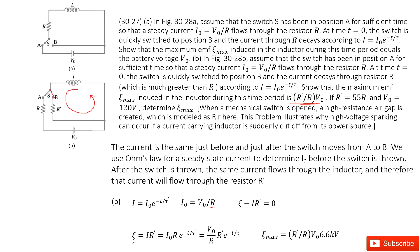We write the induced EMF as I times R-plus, and since this I changes with time T, we substitute it in. We can replace I0 with V0 divided by R. To find the maximum epsilon, we set t equal to 0, so the exponential term becomes 1. The maximum EMF is therefore (R-plus over R) times V0. Inputting all the given quantities, with V0 equal to 120 volts, we get 6.6 kilovolts.